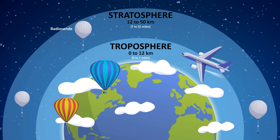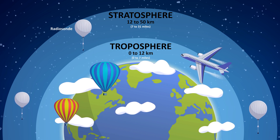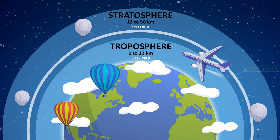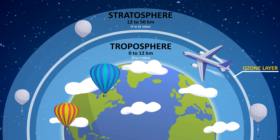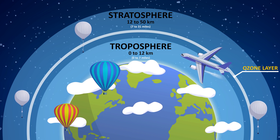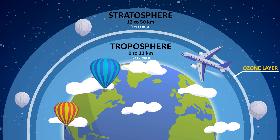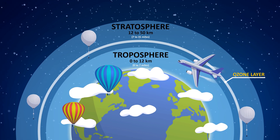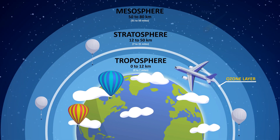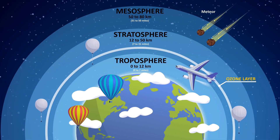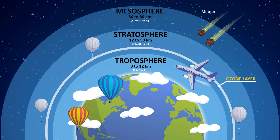Temperature rises within the stratosphere but still remains well below freezing. Ozone layer: the ozone layer is a region of Earth's stratosphere that absorbs most of the sun's ultraviolet radiation.